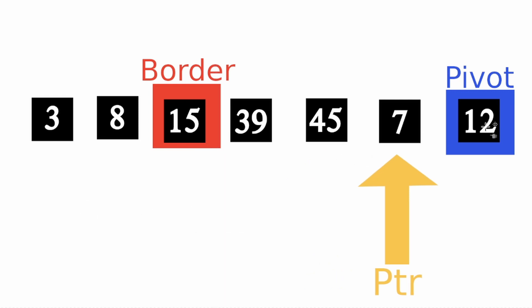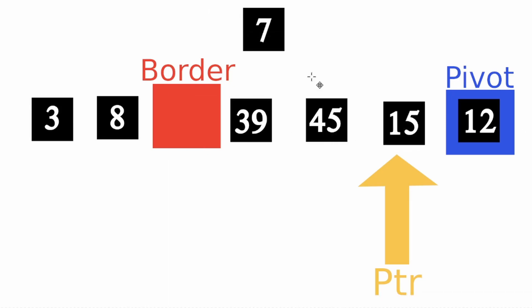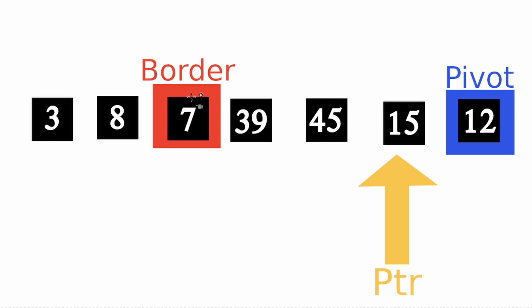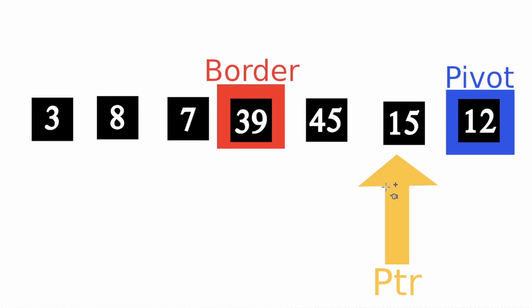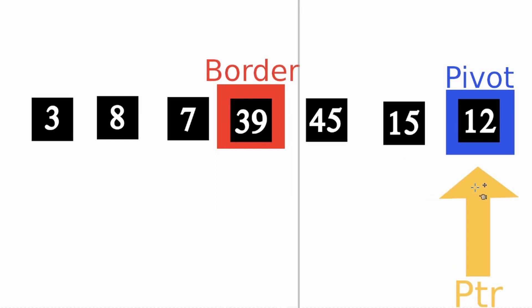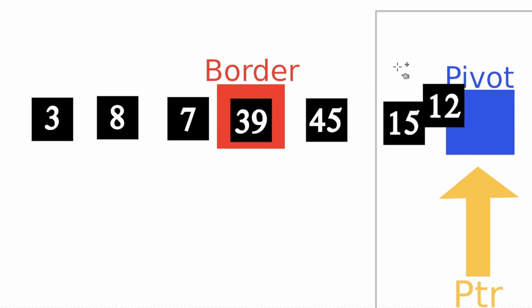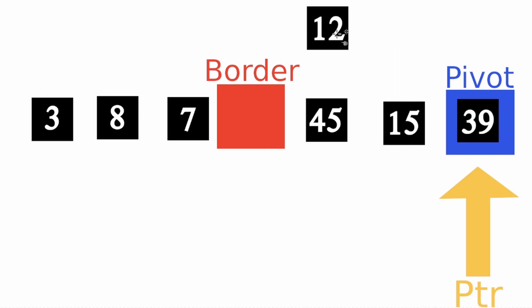Now we ask if 7 is less than 12. That is true, which means we want to swap these two values — swap 15, which is the border value, with the 7. Then move the border to the right by 1 because we did swap something, and move the pointer along by 1. Once we reach the pivot point, we do not want to compare it with the pivot point — that would not make sense. This is the last step: swap the pivot point and the border value.